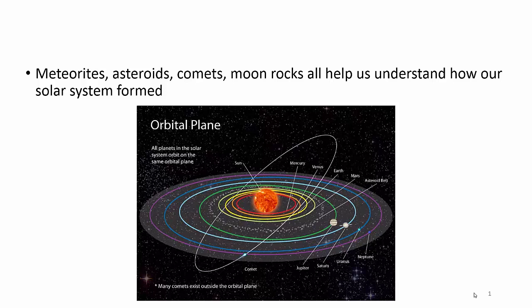All of this stuff in space helps us understand how our solar system was formed. We've got the sun, the planets, which we'll talk about later, the asteroid belts. We talked about meteorites, asteroids, comets, the moon. All these different things come together and give us more information so we can develop a better theory on how our solar system formed.